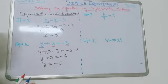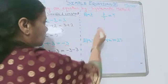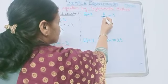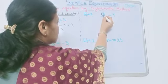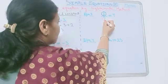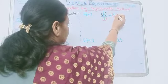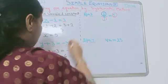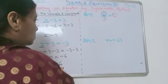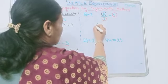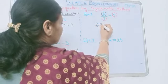Let's consider another example: P upon 7 is equal to 4. Here, the term P is variable and the terms 7 and 4 are constant. We have to separate this 7 from P. To separate this 7, we have to multiply this side with 7.